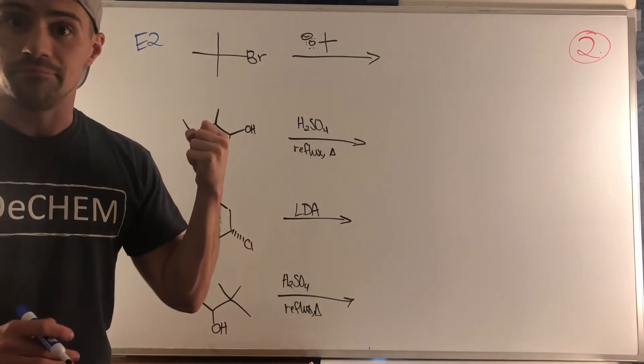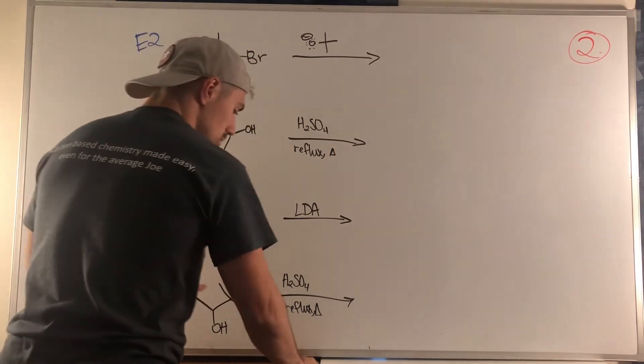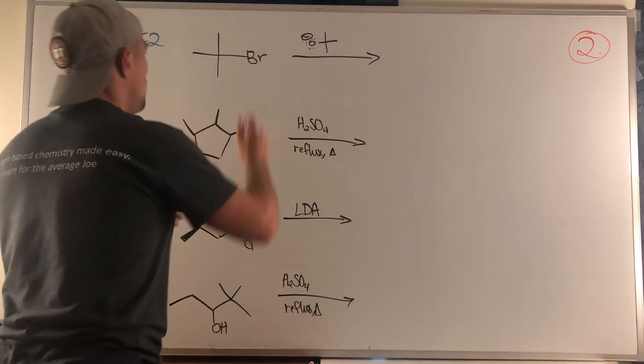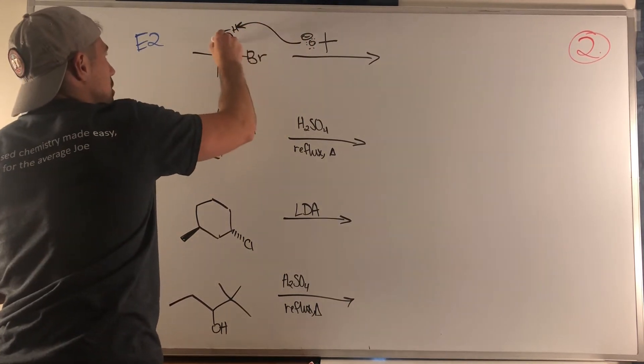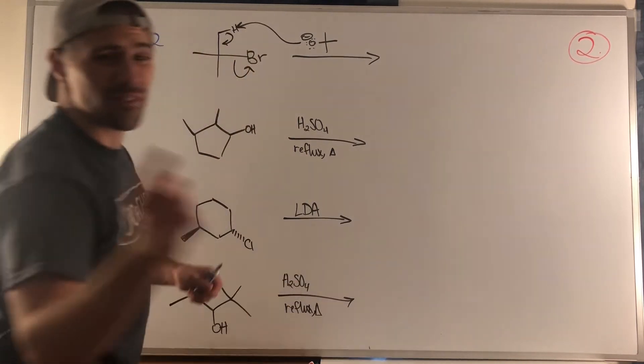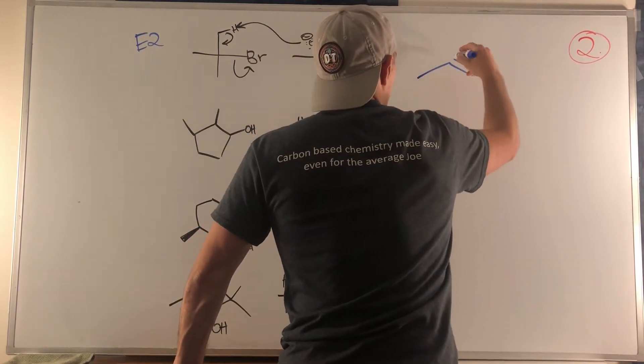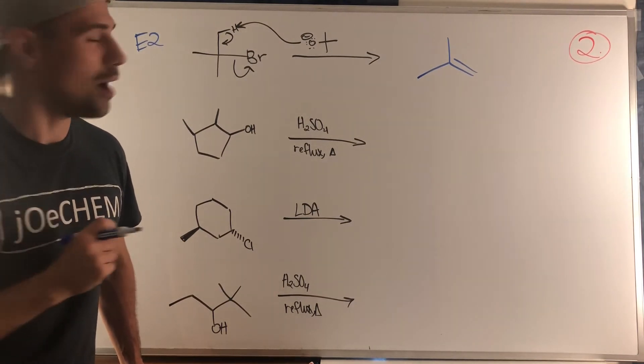In this case we're tertiary, so we're only doing elimination. It is one of our two go-to E2 bases. We have a bunch of equivalent positions, but we know we're going to abstract a neighboring proton, form a double bond, kick off the leaving group all in one motion, and we will make isobutylene.